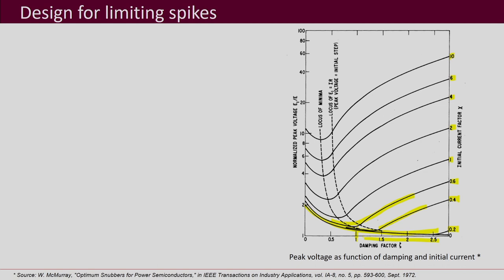Once plotted, we observe that at certain points the curves have a minima — E1/E becomes minimum at those points. We note the corresponding values of E1/E, calling them E1/E_0, and the corresponding chi values as chi_0 and the zeta values as zeta_0. This gives another set of values of zeta_0 and E1/E_0 for each chi value.